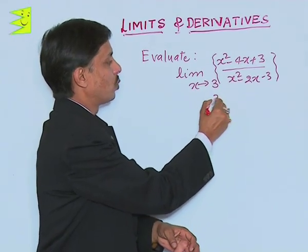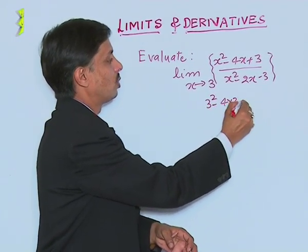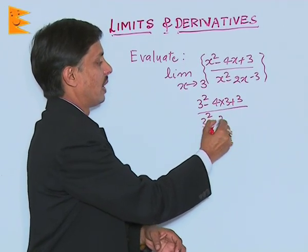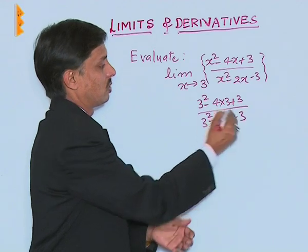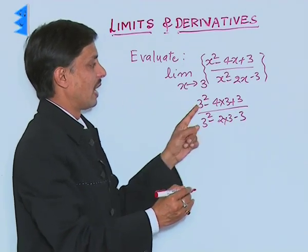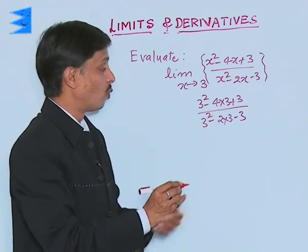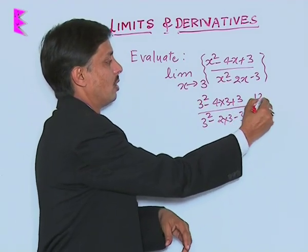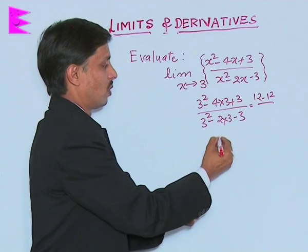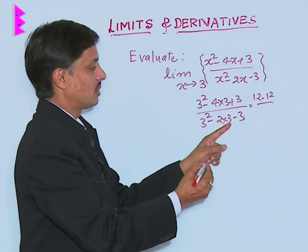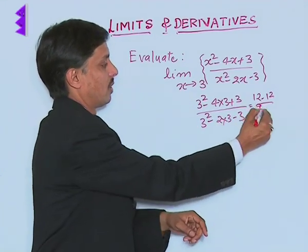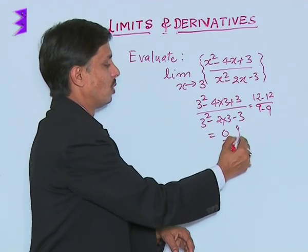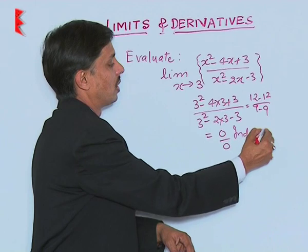This will be 3 square minus 4 into 3 plus 3 upon 3 square minus 2 into 3 minus 3. This becomes 12 minus 12 upon 9 minus 6 minus 3, which is 9 minus 9, which becomes 0 upon 0, said to be indeterminate form.